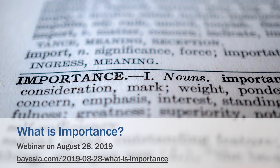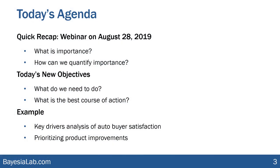In a way, this webinar is a sequel to the webinar on importance which we hosted back in August. For those of you who missed it, we have a recording available at this URL. We introduced quite a number of concepts related to importance — everything from arc force, node force, mutual information, etc. What we will do now is quickly provide a recap of that webinar on what is importance and how we can quantify it, and then move on to our new objectives.